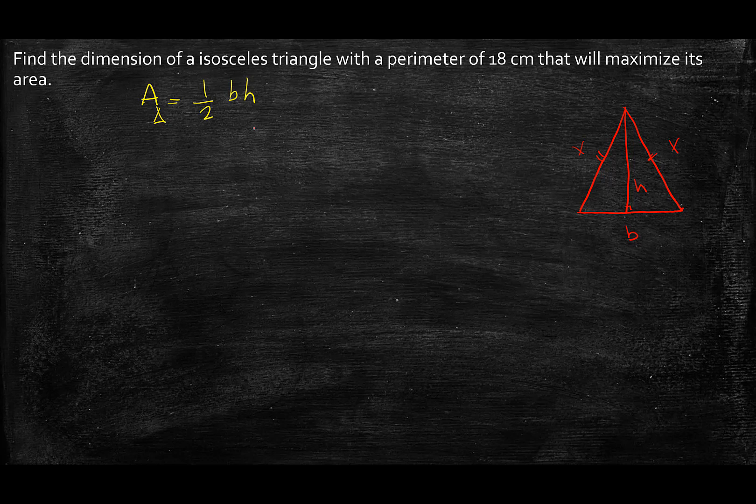Now when I look at the picture, how can I actually relate b and h? So I know if this is an isosceles triangle, the height is going to hit the base in the middle. So this part that I'm going to draw in yellow is going to be b over 2. And this is h and this is x. And I also know the perimeter of my triangle is equal to 18. So the perimeter is 2x plus b equals 18. Therefore, I can write b as 18 minus 2x.